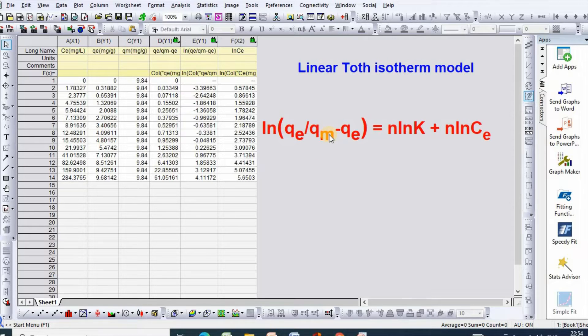QM is the Toth maximum adsorption capacity, n is the Toth exponential, and K is the Toth isotherm constant, CE is the equilibrium concentration.